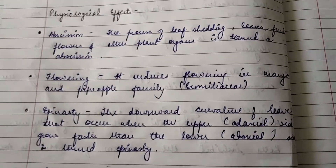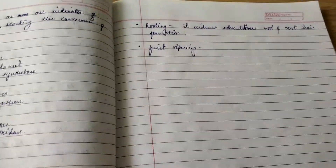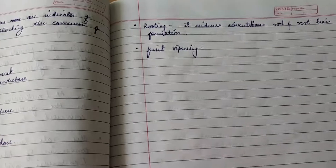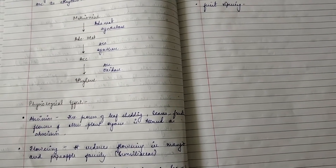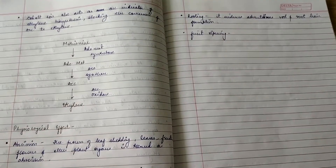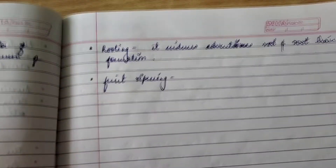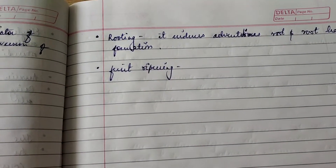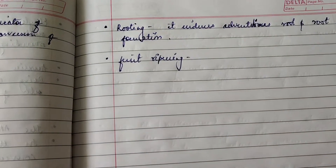Ethylene induces adventitious root and root hair formation. Root hairs originate from specialized epidermal cells of the root, and they increase the surface area of the roots, thereby increasing the absorptive capacity for water and nutrients.